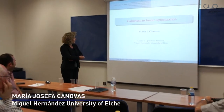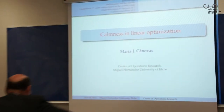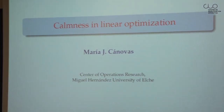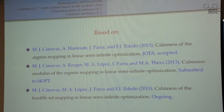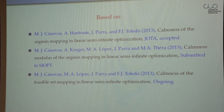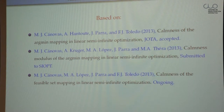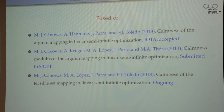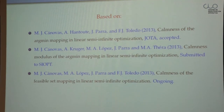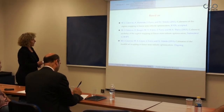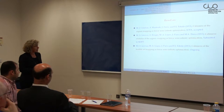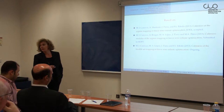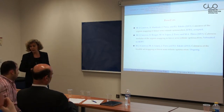In this talk I'm going to present some results about the calmness property in linear optimization. This is research of our group together with some collaborators. The talk is based on two papers plus one ongoing work. The first one by Jantute, Juan Parra, Javier Toledo, and myself introduces a characterization for the calmness property of the optimal set mapping. The second one, together with Alex Krugel, Marco López, Juan Parra, and Michel Terra, provides results about the calmness modulus formula. The last ongoing work deals with calmness for the feasible set mapping in linear optimization.